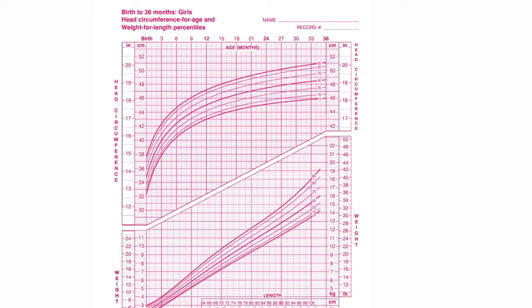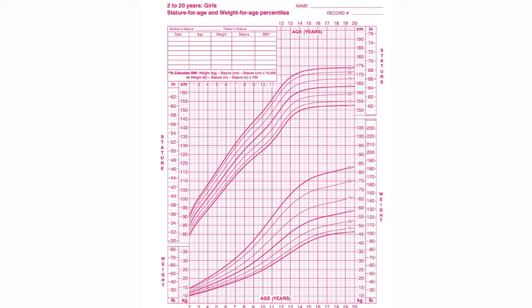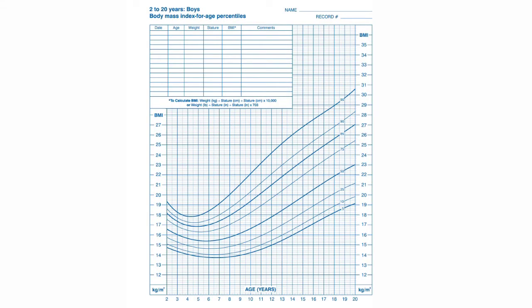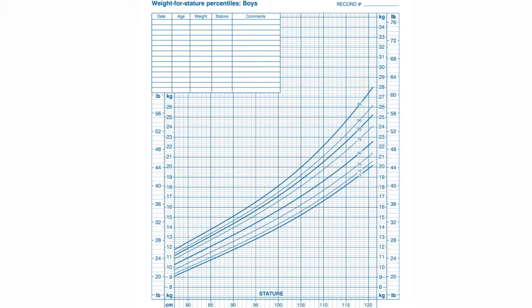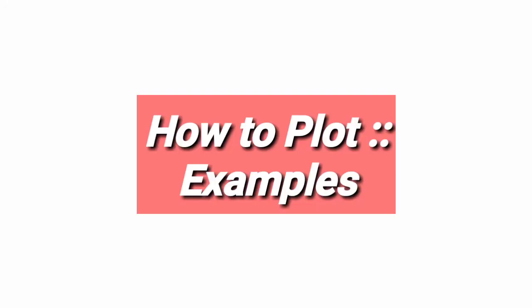There is also a chart from birth to 36 months for girls' head circumference. For ages 2 to 20 years, there are boys' charts showing stature-for-age and weight-for-age centiles. The same charts are available for girls. BMI-for-age percentile charts are used from 2 to 20 years — before age 2, use weight-for-age, not BMI. The weight-for-stature chart is important for wasting, and stunting is defined by height-for-age.